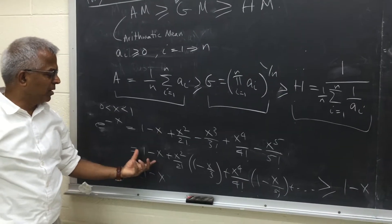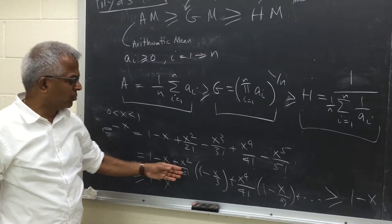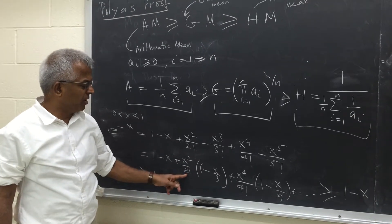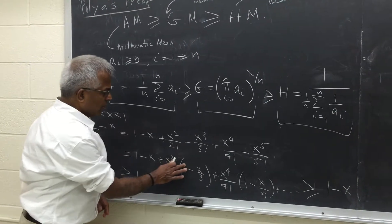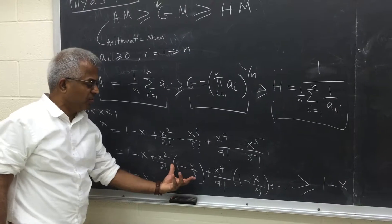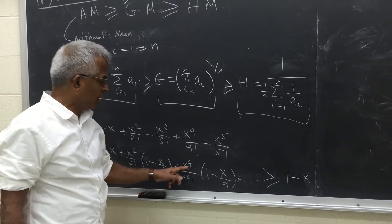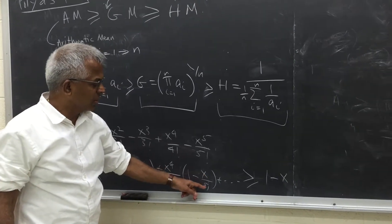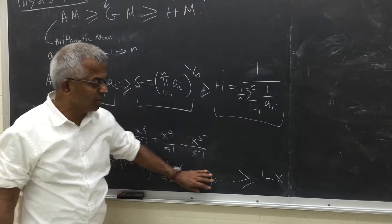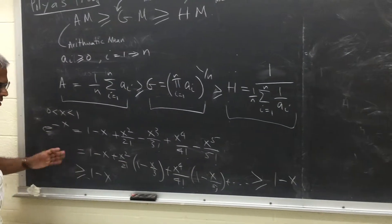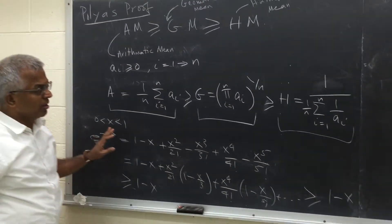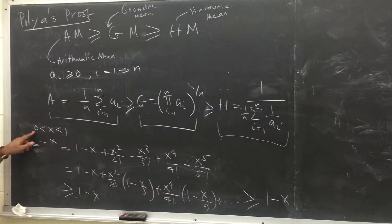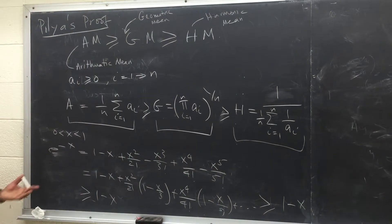If you rearrange the series as 1 minus x plus x²/2! and group pairs of terms, each grouped pair is non-negative — for example, x²/2! times (1 minus x/3) is non-negative for x in [0,1], and similarly for further terms. So everything is non-negative, giving the inequality e^(−x) ≥ 1 − x when x is between 0 and 1.